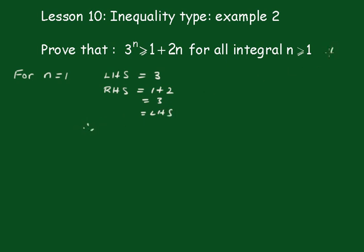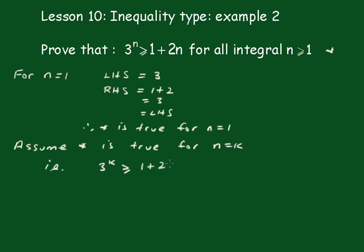Therefore the statement is true for n equals 1. Now we'll assume the statement is true for n equals k. That is, 3 to the k is greater than or equal to 1 plus 2k. That's our assumption statement.